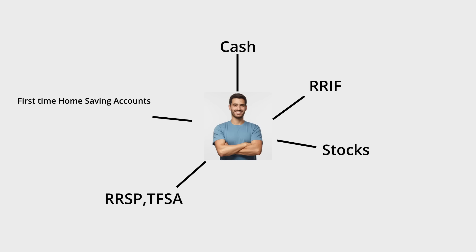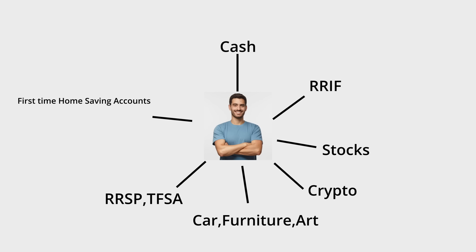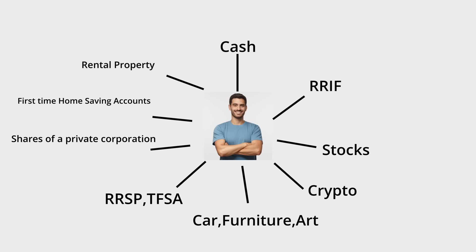Your assets may also include crypto, investment accounts, your car, furniture, paintings, shares of a private corporation, rental properties held in your personal name, and your primary residence. These are all the asset categories you need to sit down and think about. The Income Tax Act has already determined the tax implication for each of them, so let's go through them at a high level.